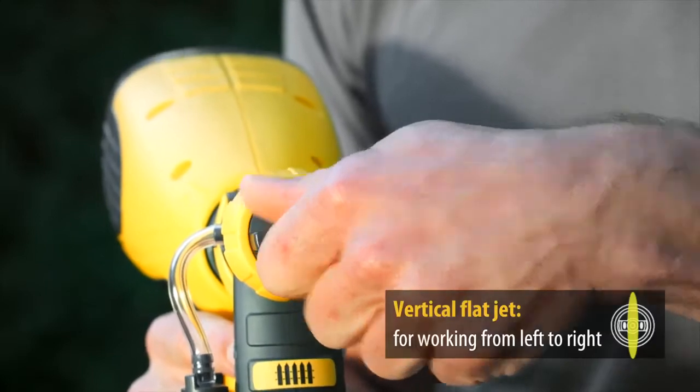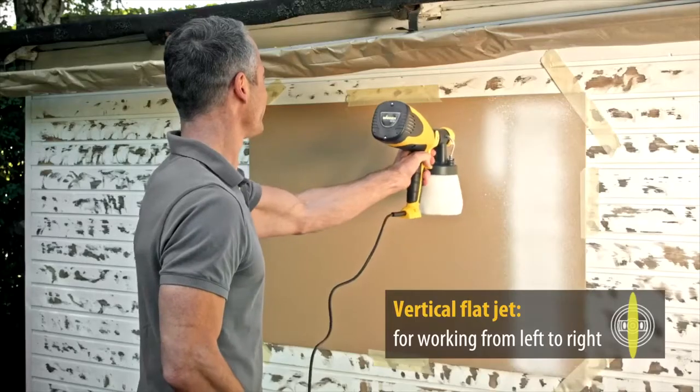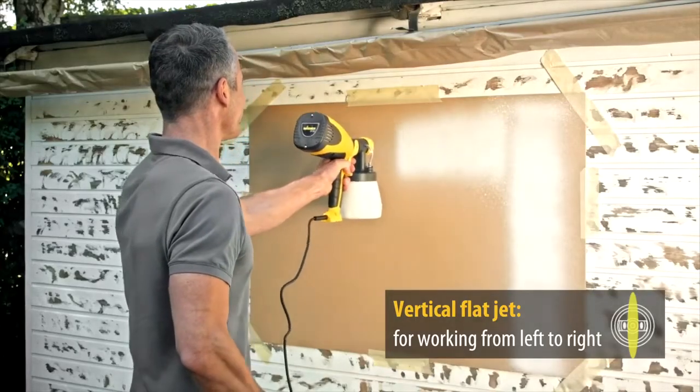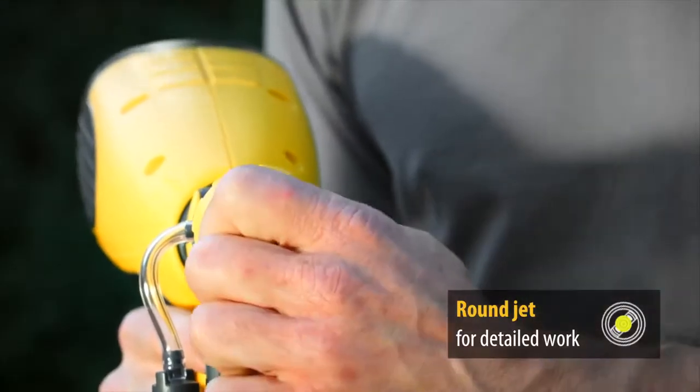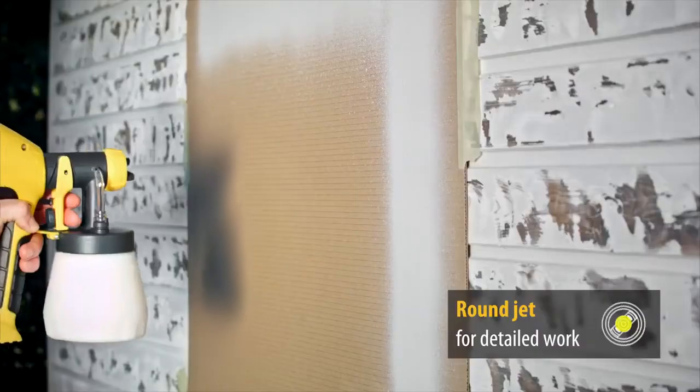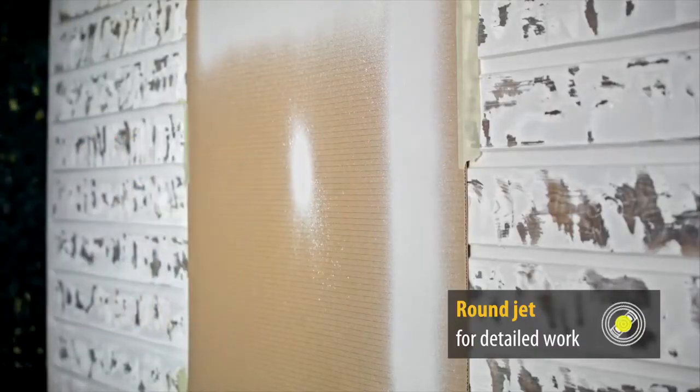The paint jet can be adjusted to match your project. The W100 makes work easy, whether vertical, horizontal or even detailed spraying. It's not a problem because the spray nozzle can be adjusted to three different settings quickly and easily.